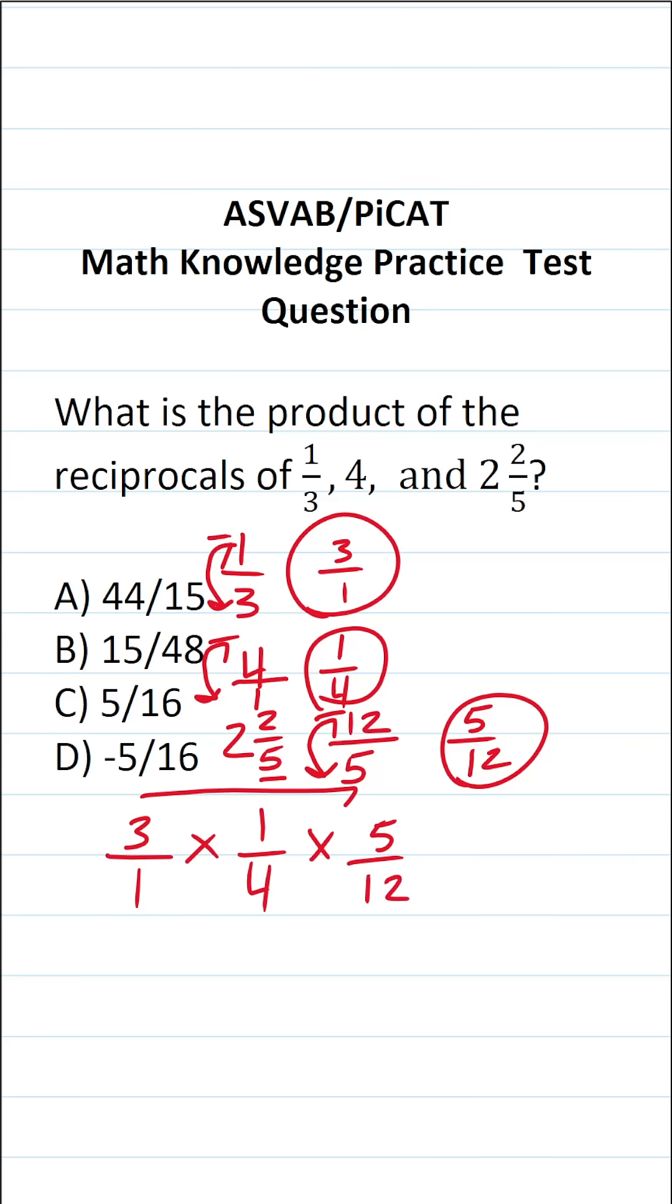When you multiply fractions, you just multiply straight across. So this becomes three times one, which is three, times five is 15. One times four is four. Four times 12 is 48.